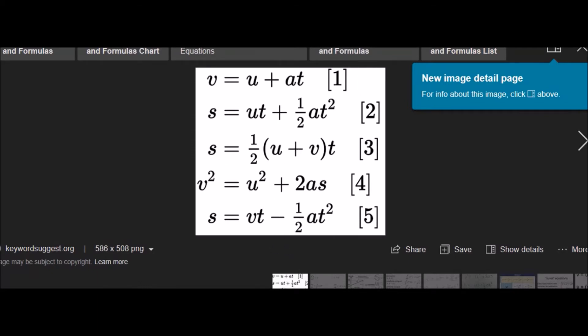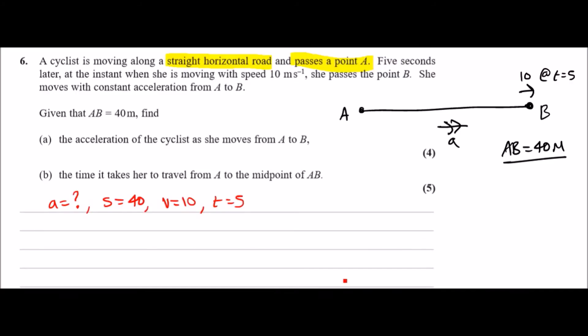Back to the work. It's going to be s equals vt minus half at squared. Now literally just plug it all in. S will be 40 equals v times t, so 10 times 5 is 50, minus half of at squared. So half of t squared, half of five squared is 12.5a.